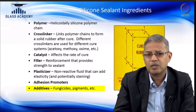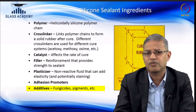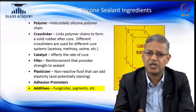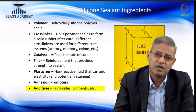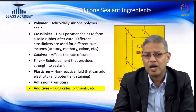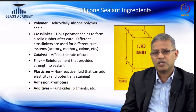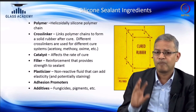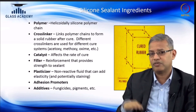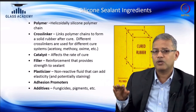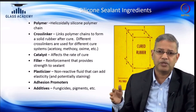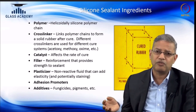Some essential additional features for the product can be obtained using special additives. For applications in moisture areas, fungicides can be added. Colors to get different shades in the sealant can be obtained by adding pigments. The silicone sealant comprises all of these materials, and the takeaway is that these ingredients are needed but can always be varied to get a formulation right for the application — or made cheap and used for a wrong application, in which case it will not give the desired properties.